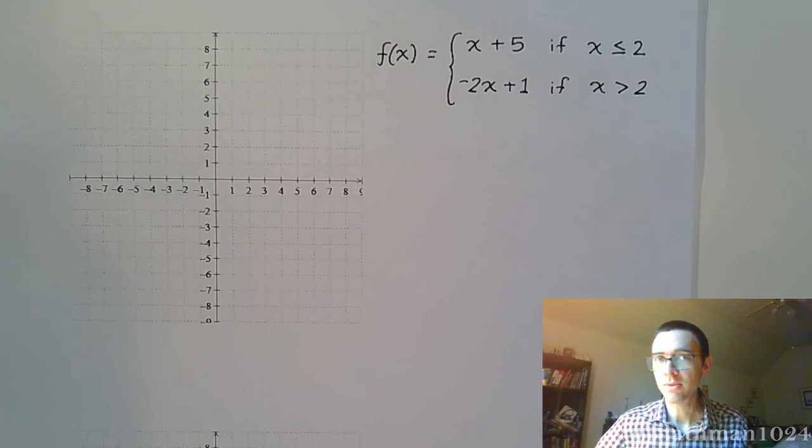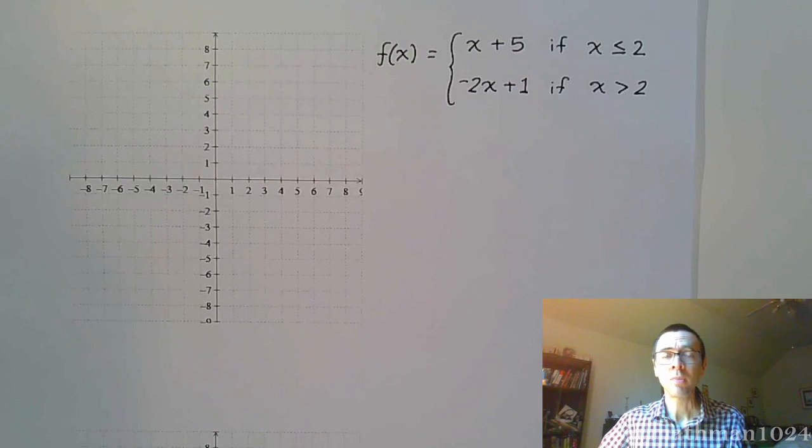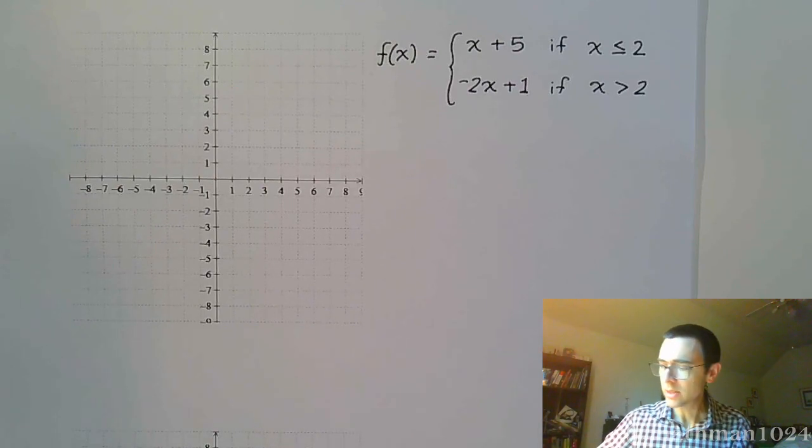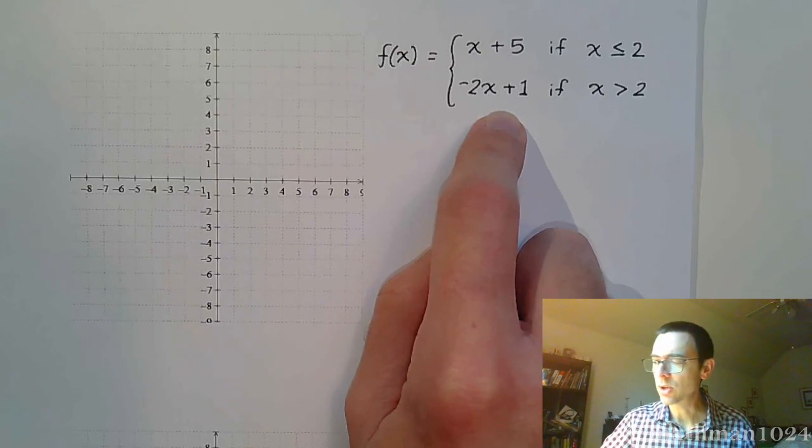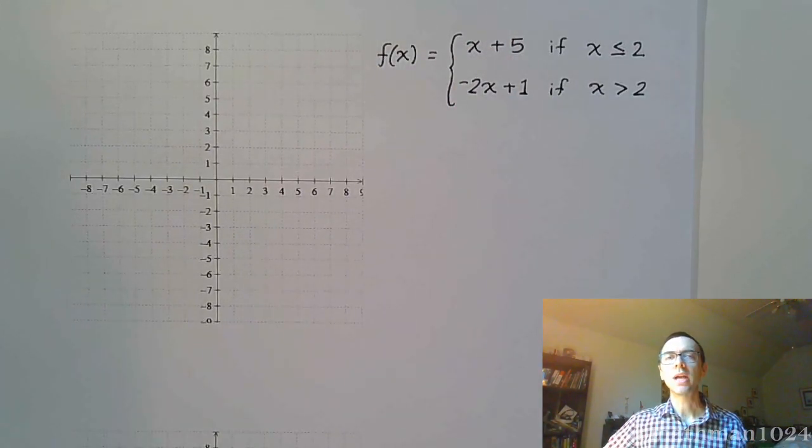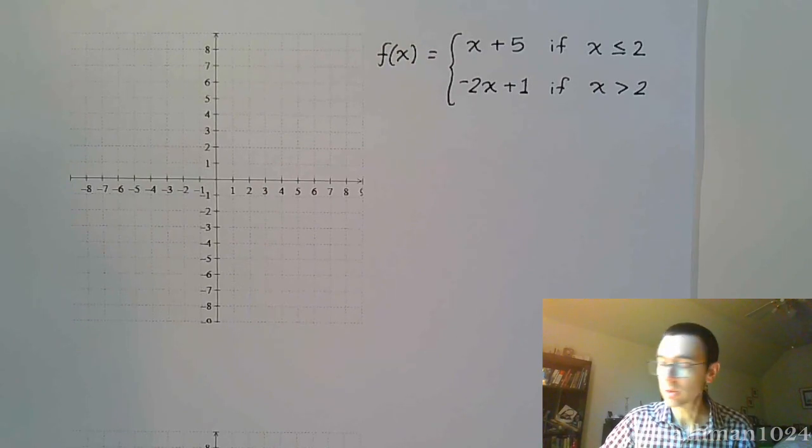In the last video, we looked at piecewise defined functions and what they meant. We did a couple of examples, and we did this guy. We just looked at how to plug values into this, how to know whether it goes into one piece or the other, and now we want to look at what the graph of this looks like.